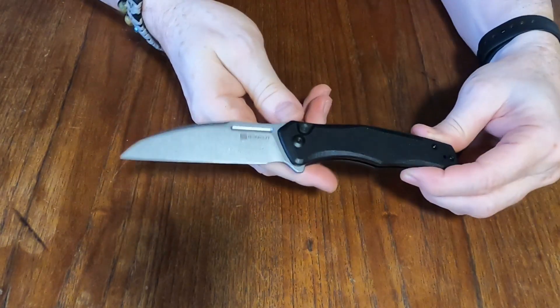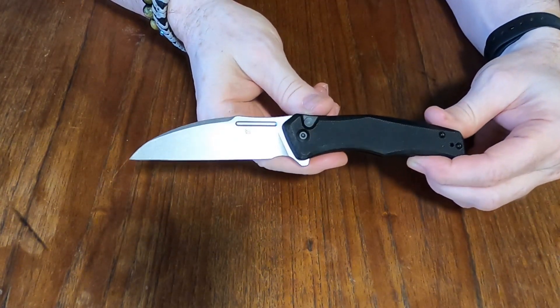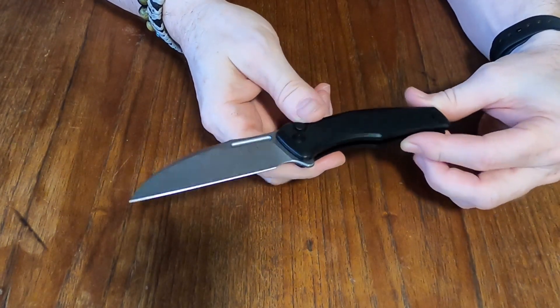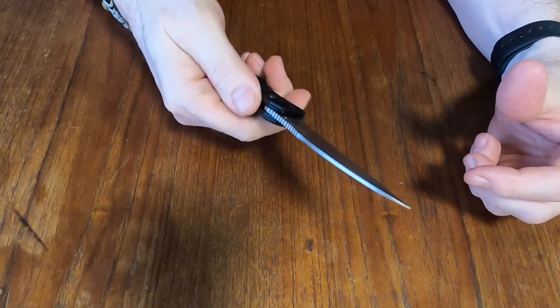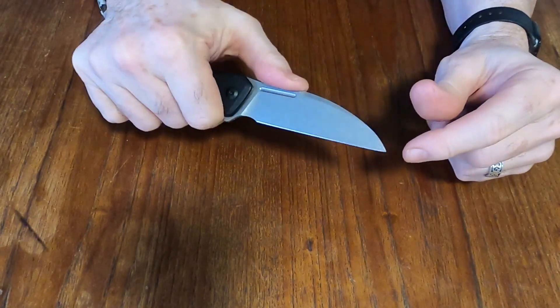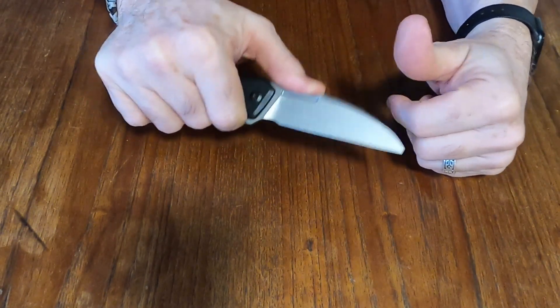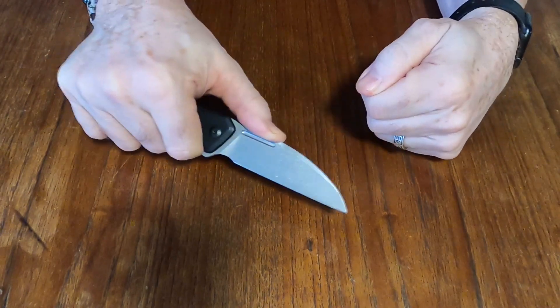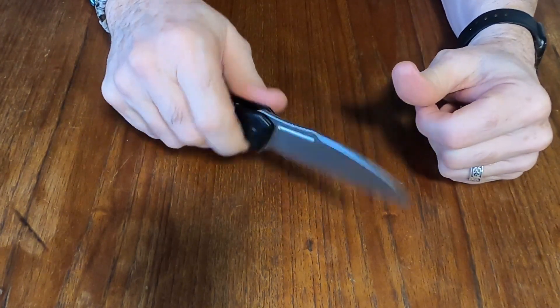And so it's a wharncliffe type blade, which is unusual. It's kind of a different blade. And they've got quite a bit of jimping on the back here. So you can really get a good purchase and control on that for good slicing.